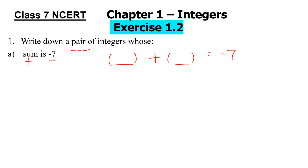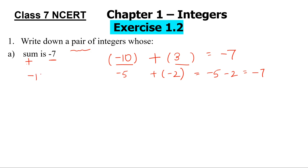One option could be minus 10 plus 3. If we solve minus 10 plus 3, we would get minus 7. Or it could be minus 5 plus minus 2, which would also give you minus 7. So you can have different answers. Let's take the first one: minus 10 and 3 as the answer.